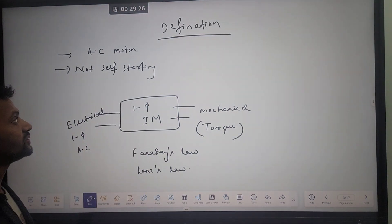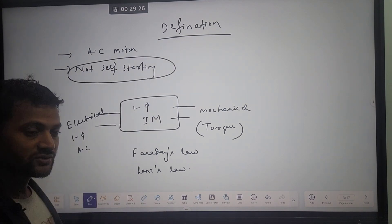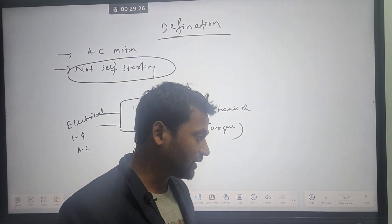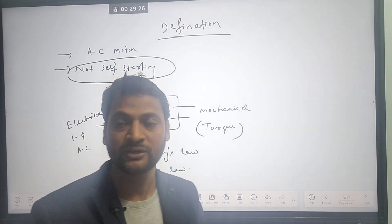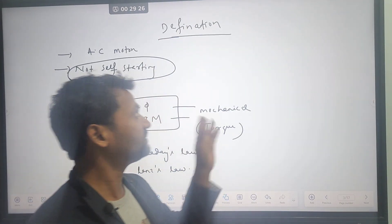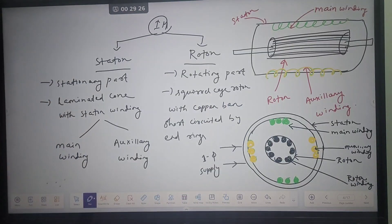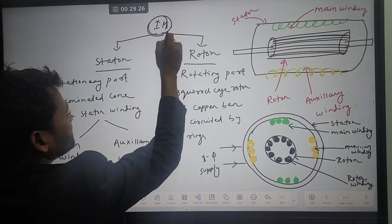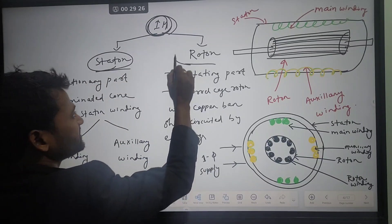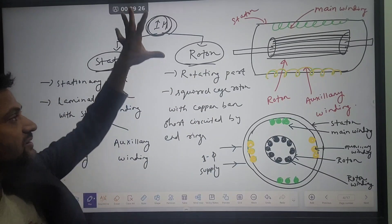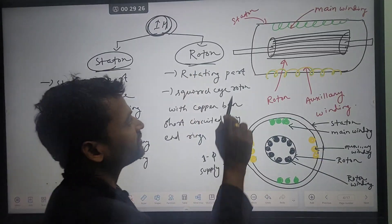Another important thing to remember: it is not a self-starting motor. So we need to make some arrangement in terms of winding for a starting phenomenon — I'll explain this in the next slide. The basic construction of the induction motor has two parts: one is the stator and second is the rotor.